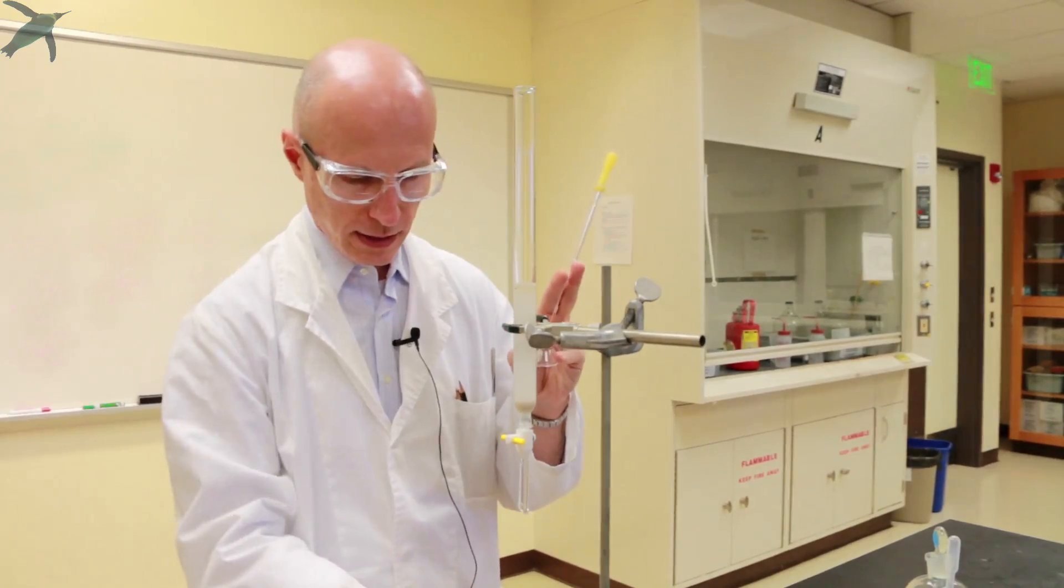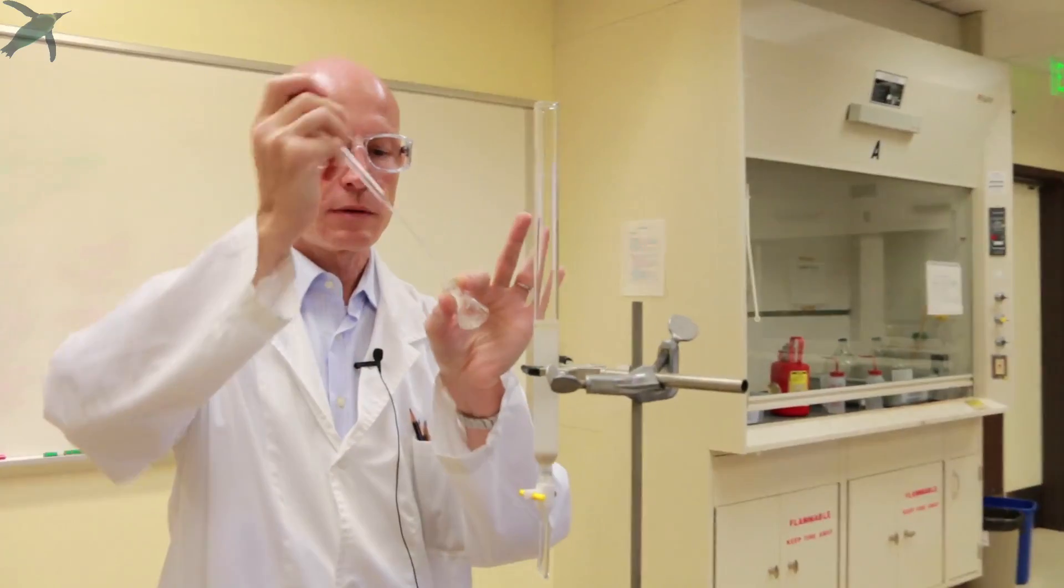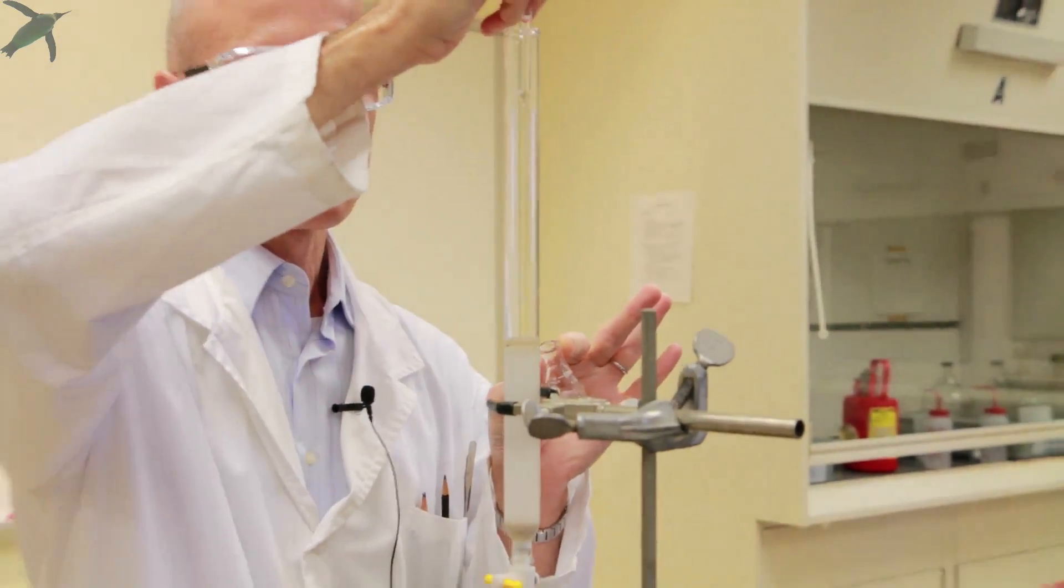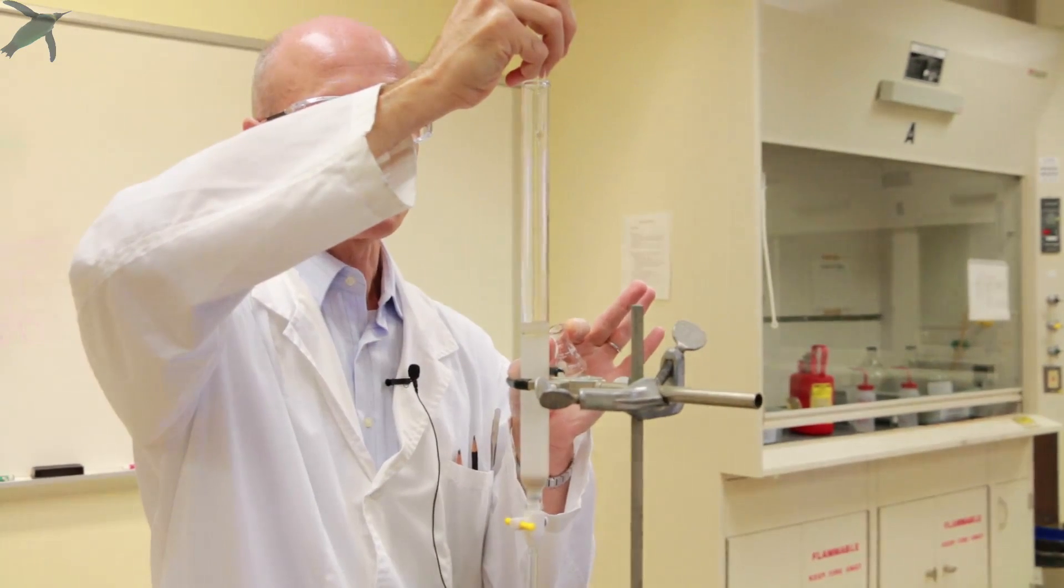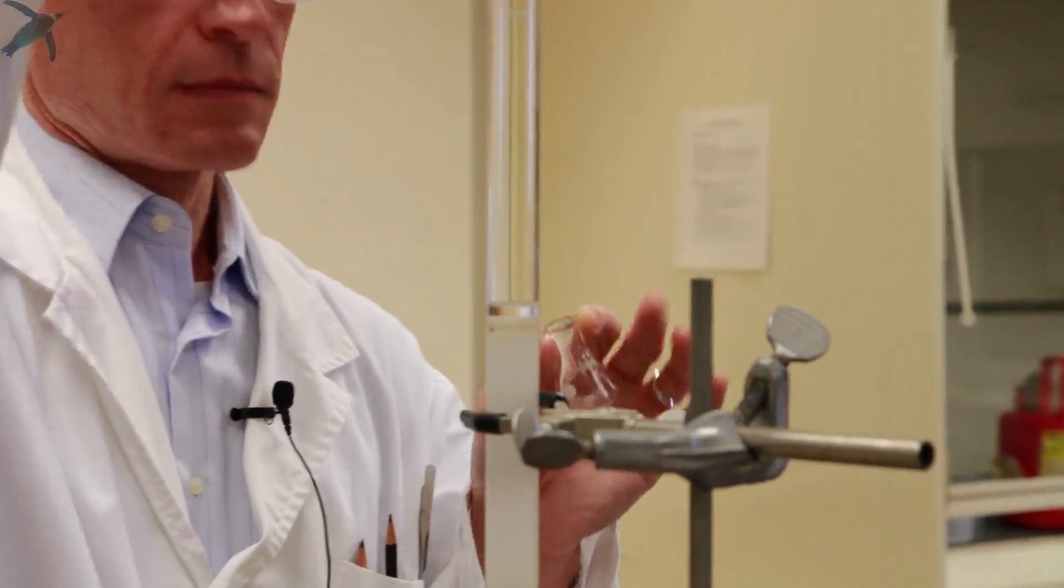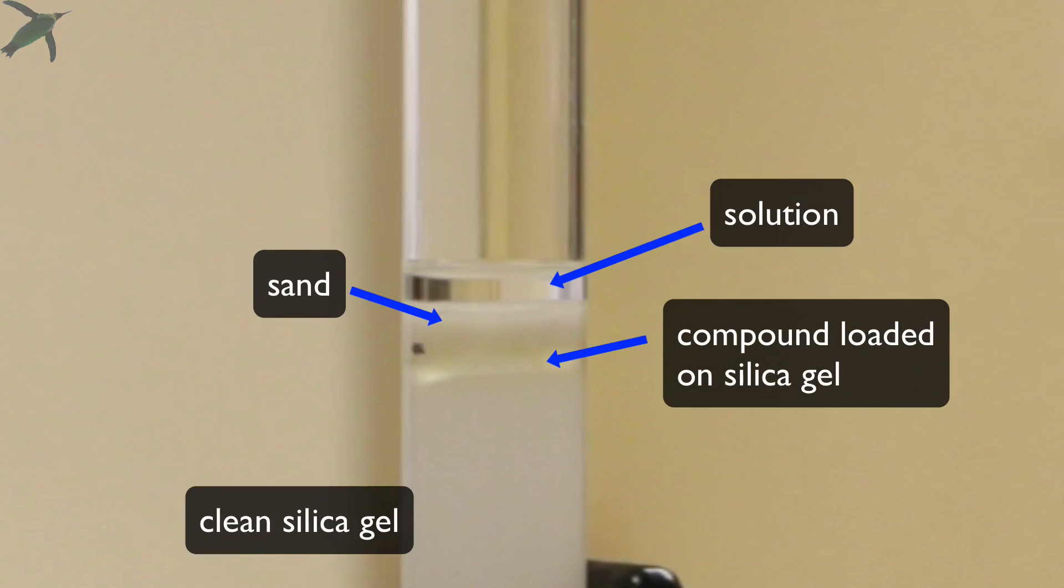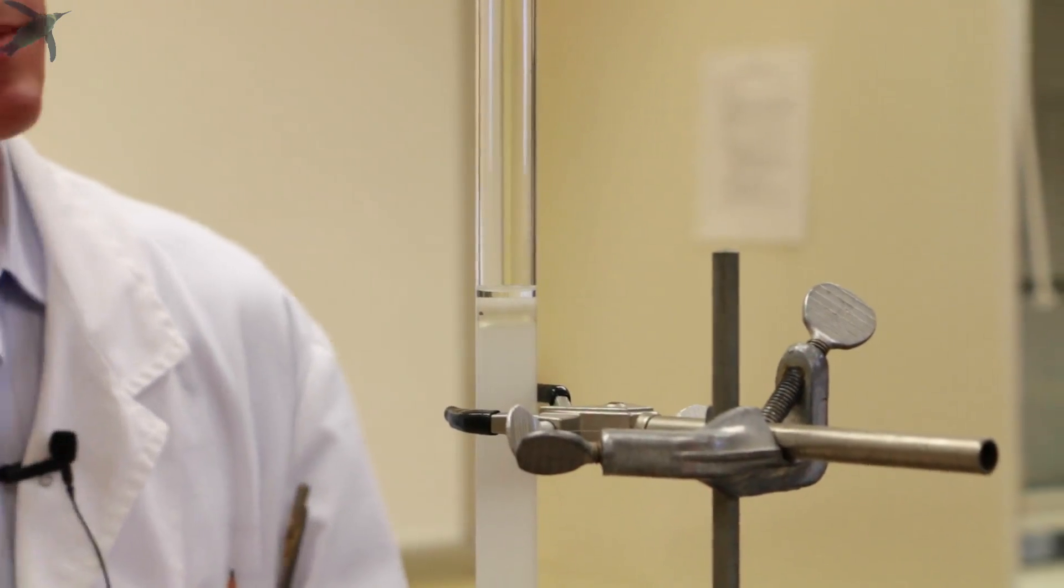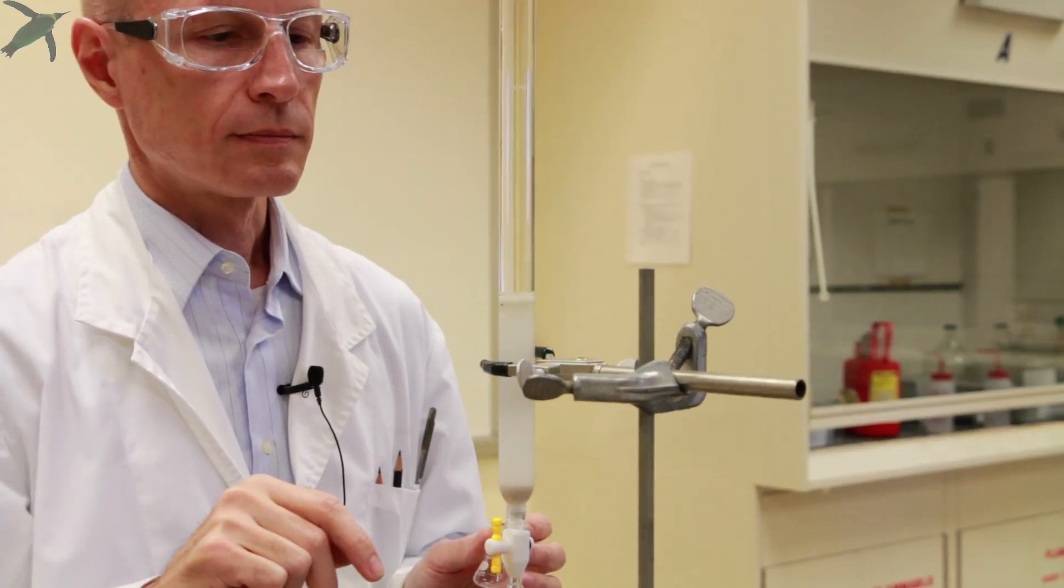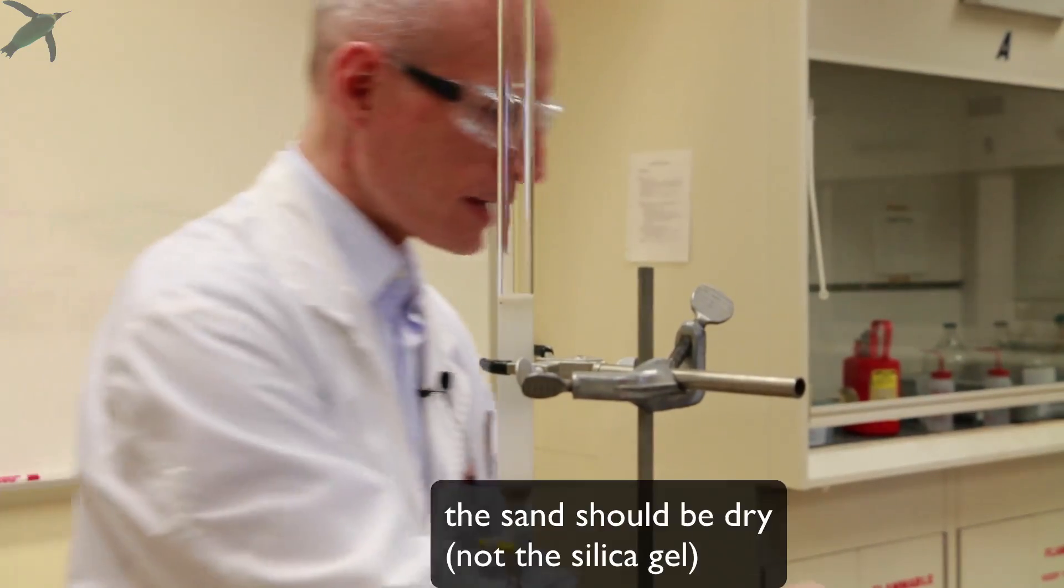So you take a clean Pasteur pipette, you take about one milliliter of solvent, you put it in, and you wash the walls. And then you put this solution again on the top of the sand. Be careful not to disturb the surface of the silica gel when you do this. And then you open the stopcock and you let the solution enter your column. And you go again dry with the silica gel. At this point, your column is loaded and you can start running it.